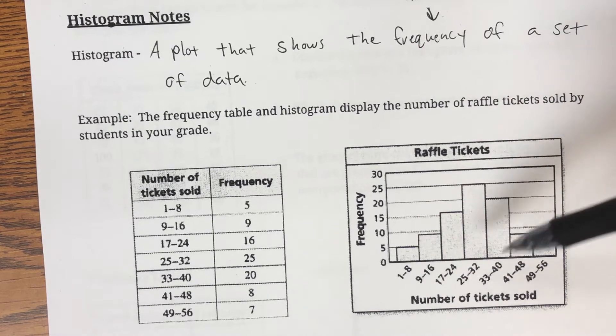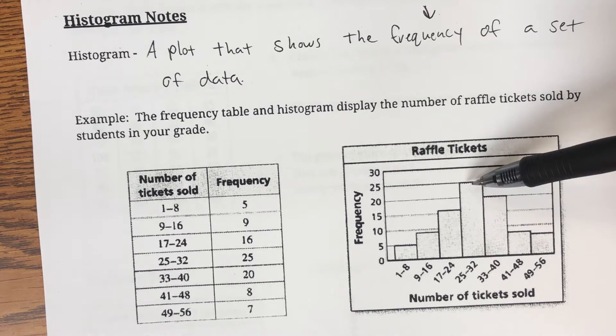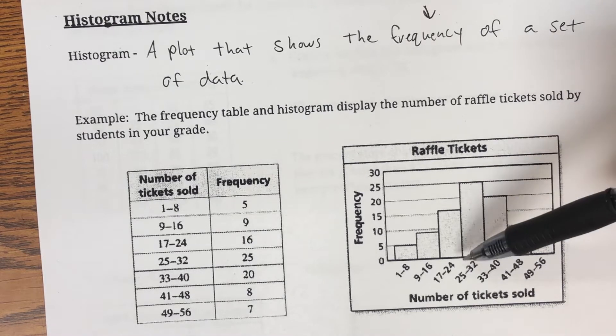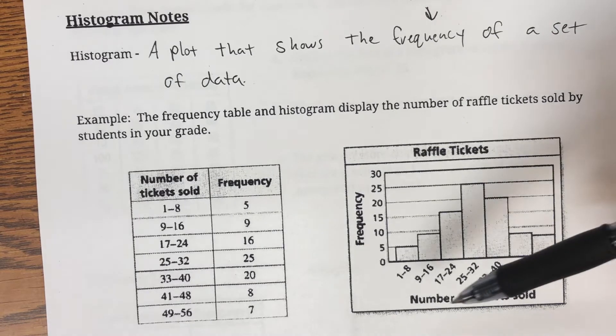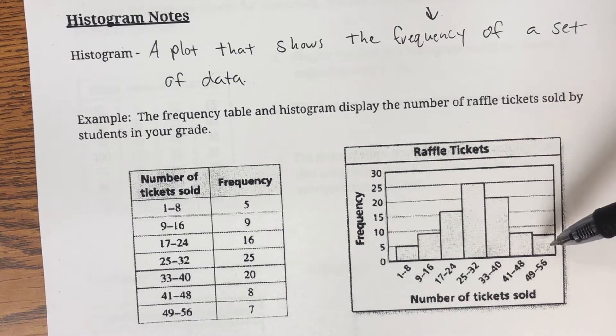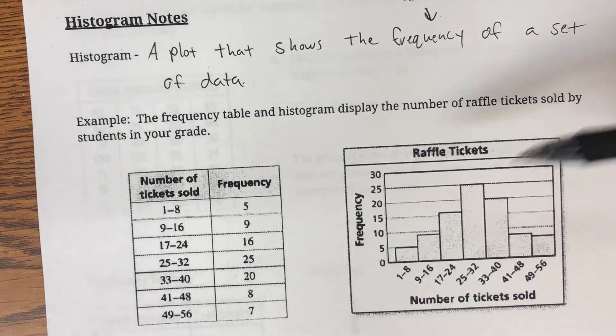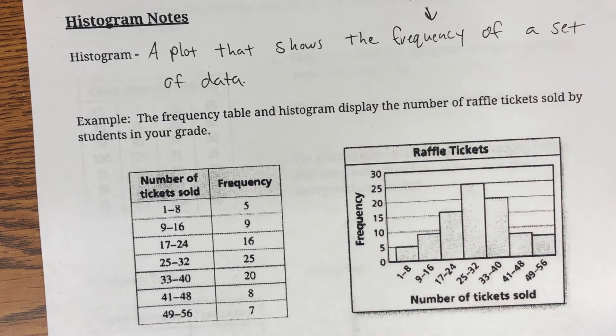We can take a look at the graph and see that most of the students, 25, sold between 25 and 32 tickets. So that's probably pretty solid. We had a couple students that sold between 49 and 56, and a few that didn't sell very many between 1 and 8. So that is a histogram.